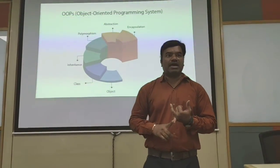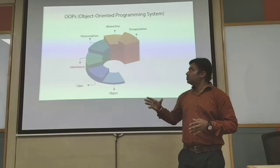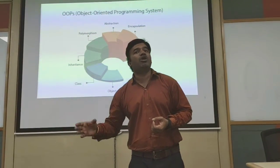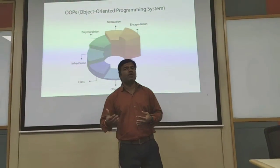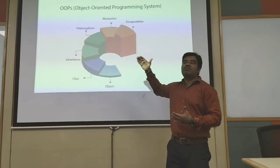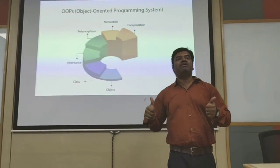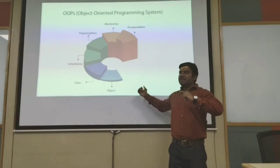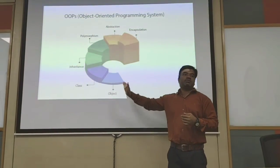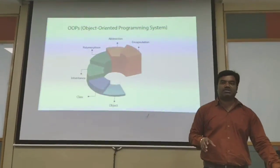To call a programming language object-oriented, it should basically follow four main properties: inheritance, polymorphism, abstraction, and encapsulation. Abstraction is something followed by almost every programming language, including procedural programming, so it is not the highlight of OOP. We always give more emphasis on inheritance, polymorphism, and encapsulation. In object-oriented programming, we first build a class, then create an object from it by copying the class properties, and then use that object in our program.